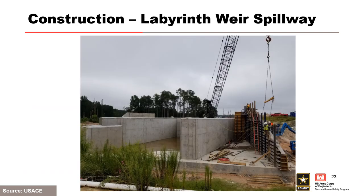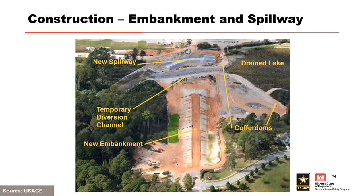A shot of the labyrinth spillway shows it more complete. Looking downstream, the new outlet works gate location is visible. An aerial view of the site shows the labyrinth spillway nearly complete with training walls constructed, though downstream work and riprap have not yet been placed. The cofferdams are still in place, but embankment construction is progressing and the temporary diversion channel remains active.